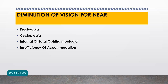Causes of vision loss specifically for near include presbyopia (age-related decrease in accommodation), drug-induced cycloplegia (paralysis of the ciliary body, which is involved in accommodation), internal or total ophthalmoplegia, and insufficiency of accommodation.